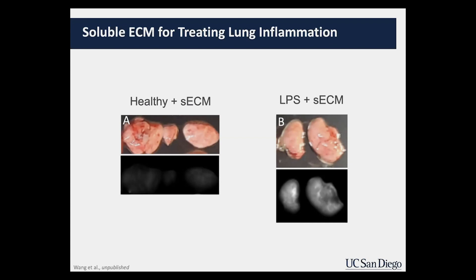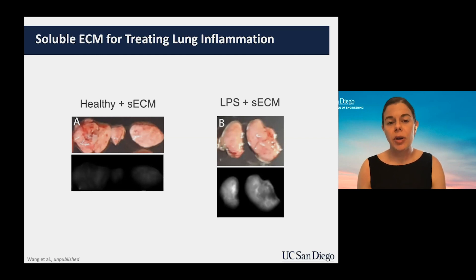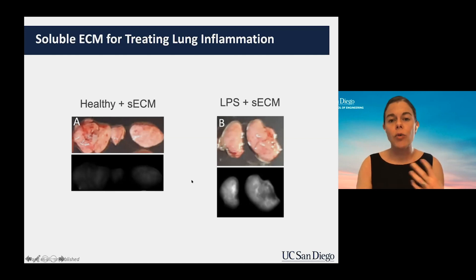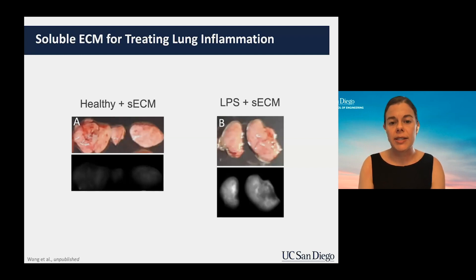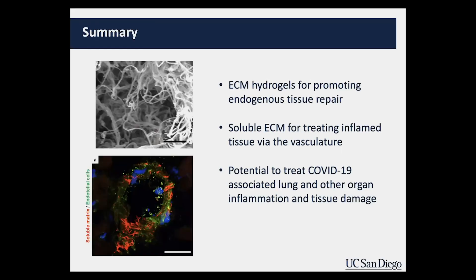With CIRM funding, we are now testing whether this material is in fact immunomodulatory — whether it will put a halt on inflammation and ideally create a pro-remodeling response that leads to lung healing. Eventually we'll examine other organs too, but right now our focus is on dampening the overactive lung inflammation that is leading to death in many COVID-19 patients.